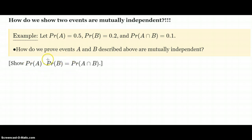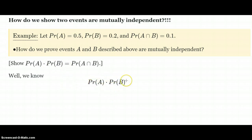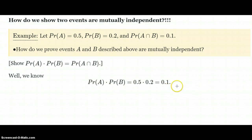Let's look at the left-hand side of the equation. I'm going to break it apart — what does the left-hand side equal, and what does the right-hand side equal? Let's multiply these two probabilities together. The probability of A is 0.5 and the probability of B is 0.2. So the probability of A times the probability of B equals 0.1.